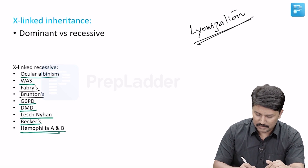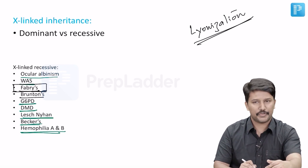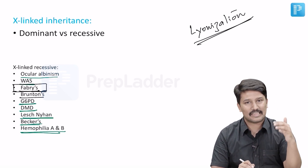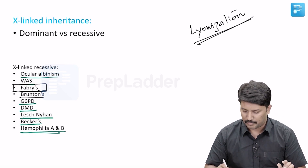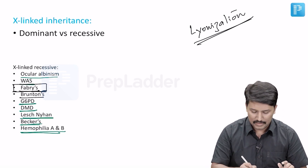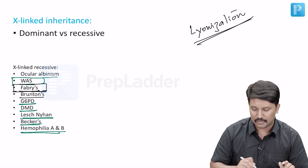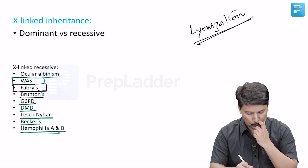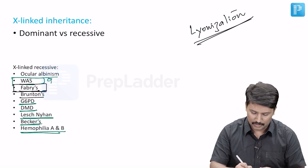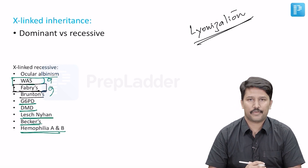Fabry's disease has been frequently asked — asking which of the following is inherited as an X-linked disorder. Wiskott-Aldrich syndrome has also been frequently asked. So remember these two in particular: Wiskott-Aldrich and Fabry's.